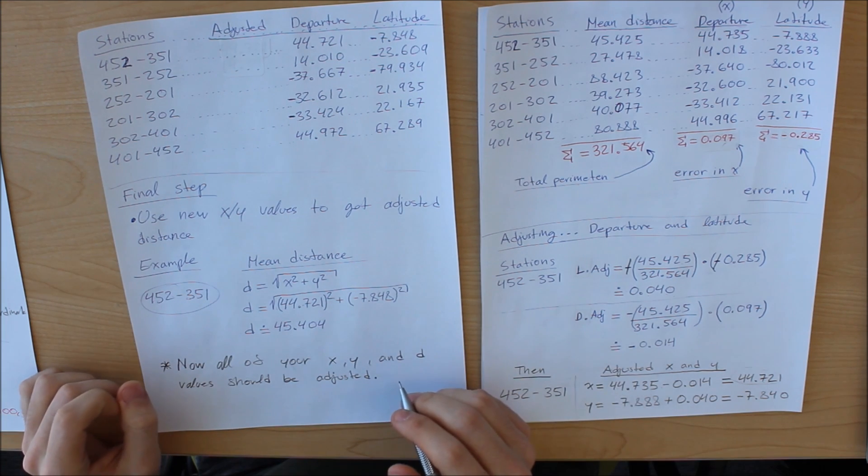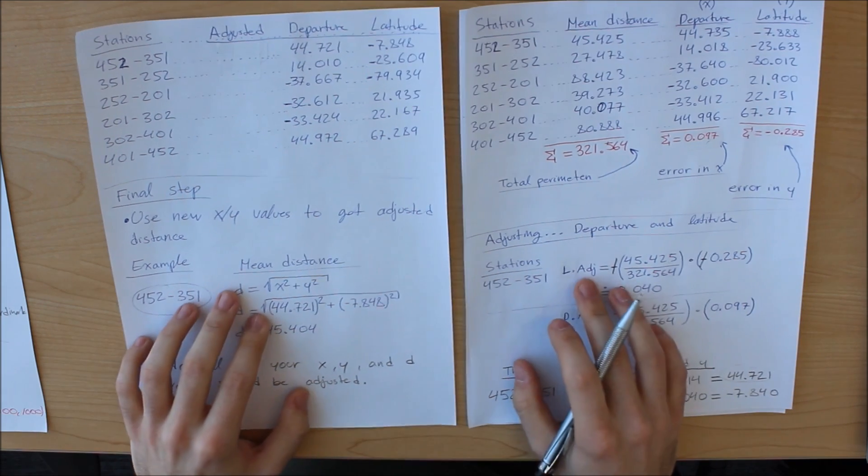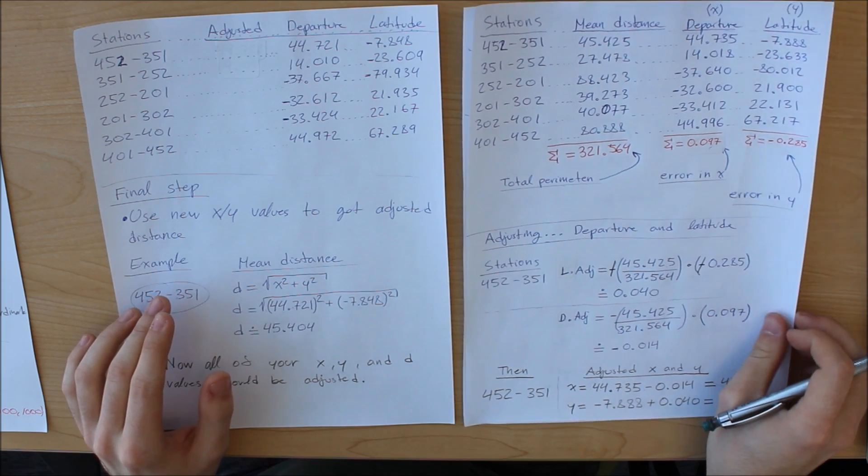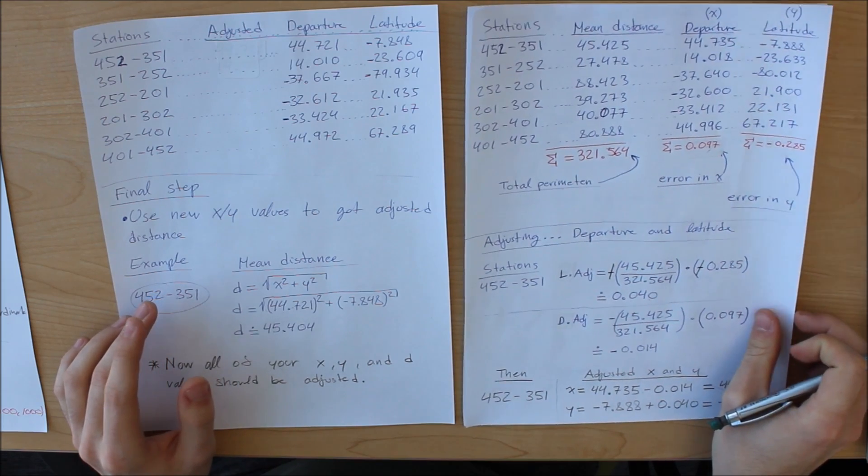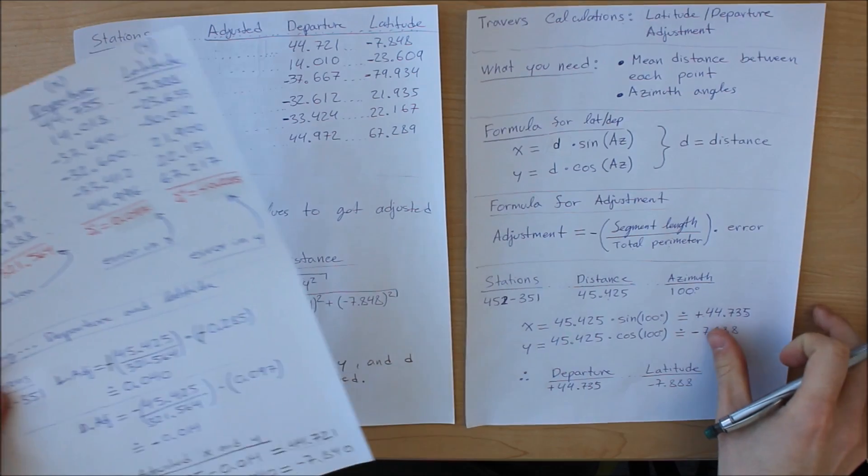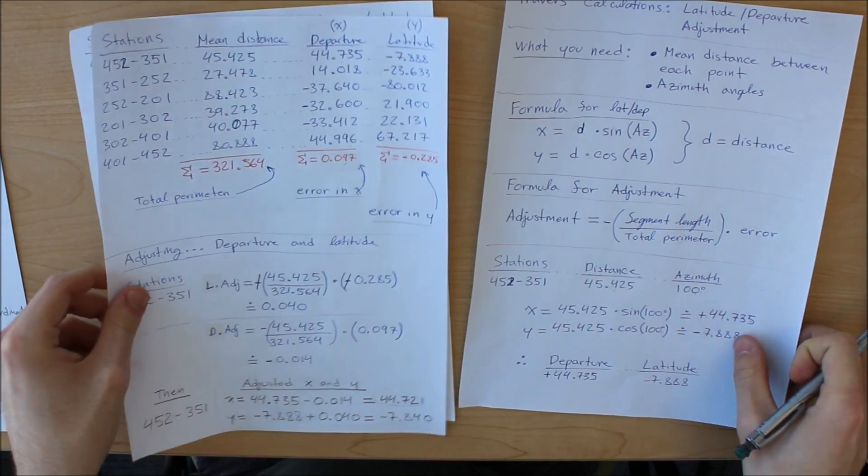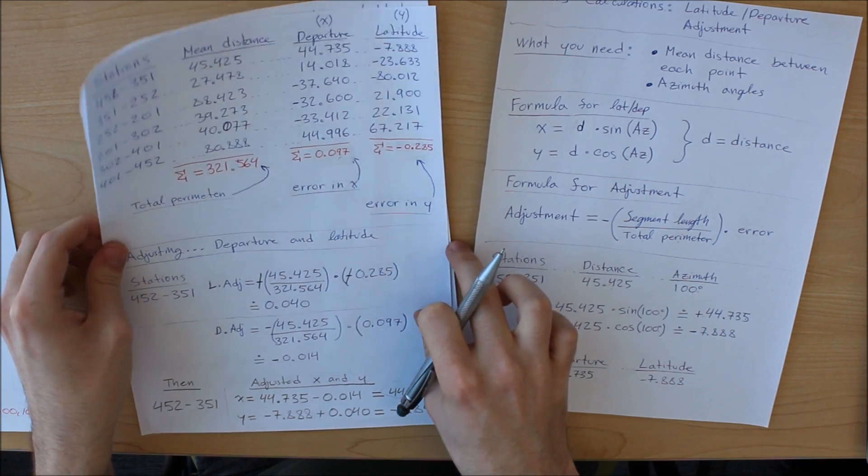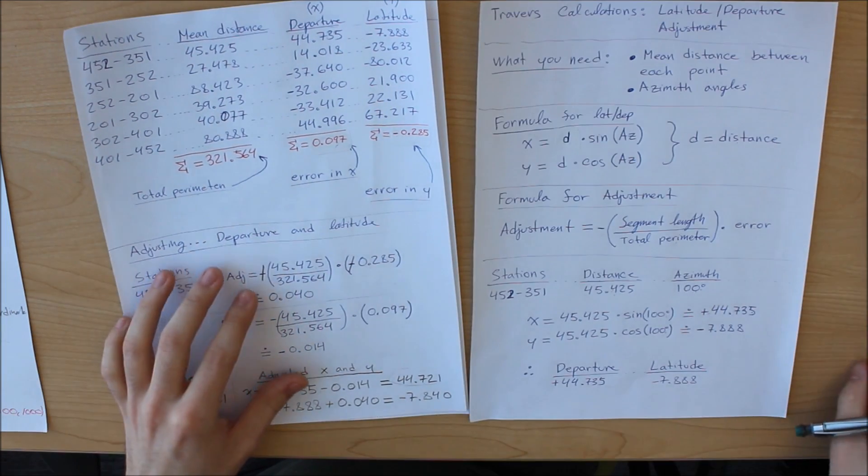And that's pretty much it. So once you do this, you're going to have all the updated results. All the updated traverse observations that you have. And everything should work out nicely. All your sums here should equal zero. That's how you know it's correct. And that's really all that you have to do.